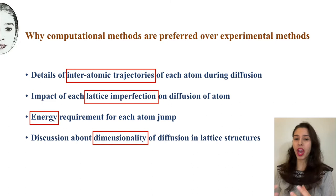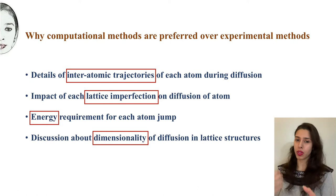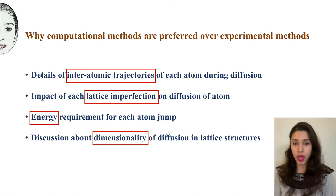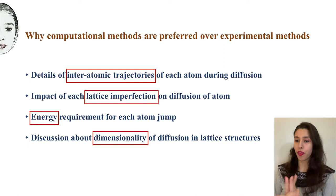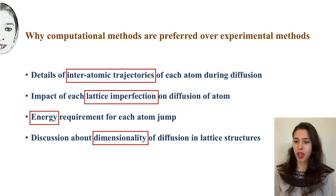In computational methods, we have an advantage over experimental methods. In experimental methods, atoms are allowed to diffuse in a crystalline solid and then the overall diffusivity coefficient is calculated. However, what we don't get to know is how each atom is moving in the system. Using computational methods, we can get the details of interatomic trajectories during the diffusion process, and we can understand the impact of lattice imperfections on the diffusion of atoms.